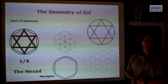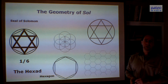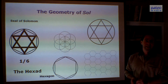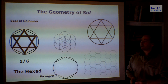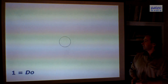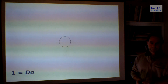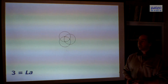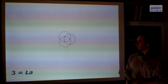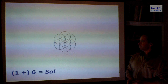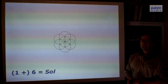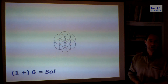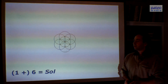Six is a beautiful number. Some people are afraid of 666, but it's the opposite of the truth — six is a really beautiful number. So one is Doh, two is Si, three is La — and we continue. Six around in the outer ring: six is Sol. Then we continue.